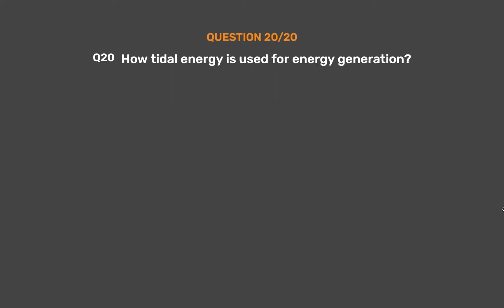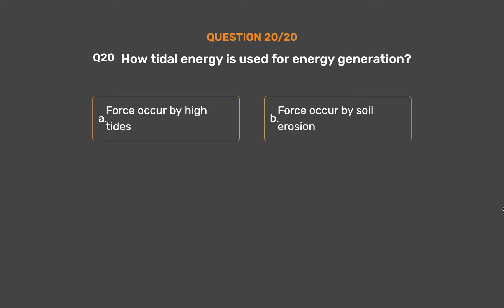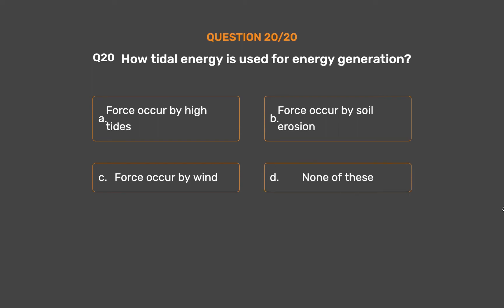Question 20: How is tidal energy used for energy generation? Option A: Force occurring by high tides. Option B: Force occurring by soil erosion. Option C: Force occurring by wind. Option D: None of these.